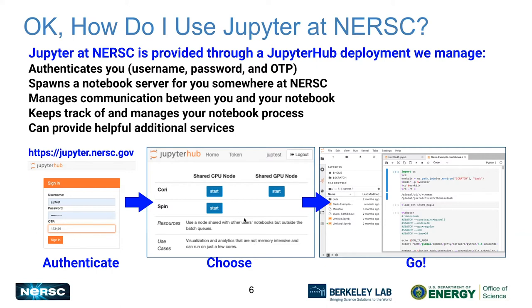Most users will see two buttons: the Cori button and the Spin button, both labeled shared CPU nodes, meaning the node is shared between you and maybe 50 other users — similar to a regular login node. You have to be mindful that there are other people on there, so you can't take all the memory. There are also other buttons depending on your permissions — if you have access to the Cori GPU cluster, you'll see a button to start a notebook on the GPU cluster.